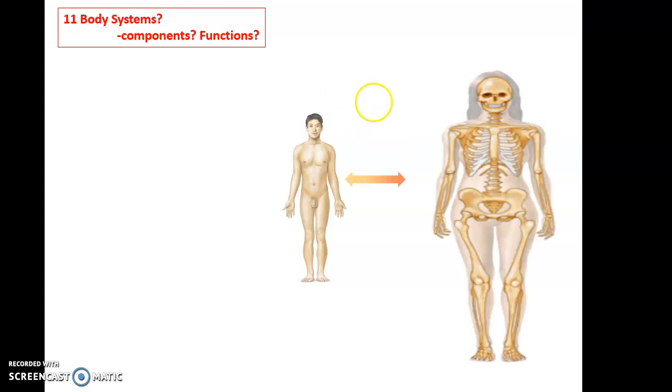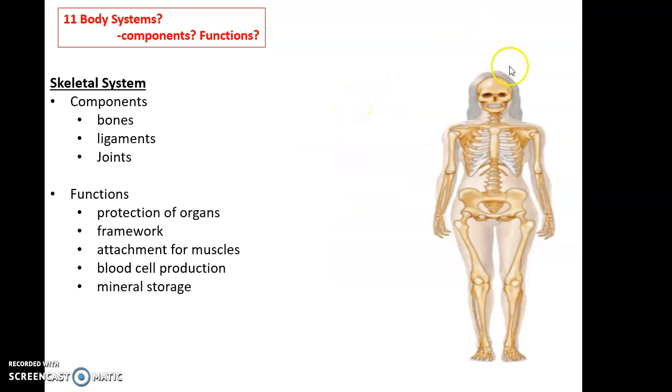The first up is this organ system. You should recognize it as the skeletal system. Its components include the various bones that make up the skeleton, the ligaments that hold the bones to each other, and the joints, the places where the bones are adjacent to each other, and sometimes they can move there at the joint, and sometimes they can't.